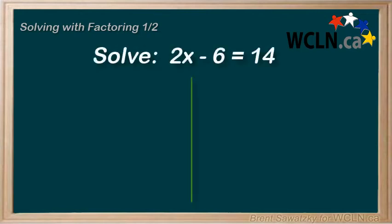At this point, we've run into many questions where we were asked to solve. For example, solve 2x minus 6 equals 14. And we recall that to solve means to determine a value for x that makes this statement true. That is, the left side is equal to the right side. And you've learned a method called isolating the variable. And we found that this works really well for a whole multitude of questions, like this one.